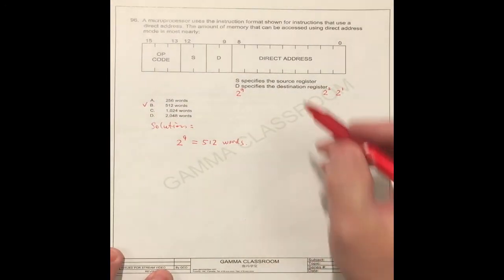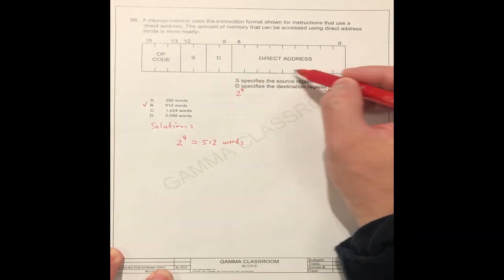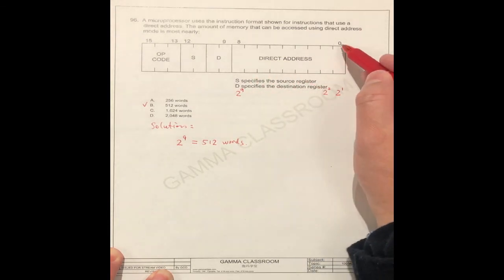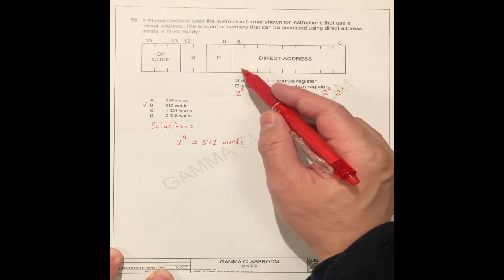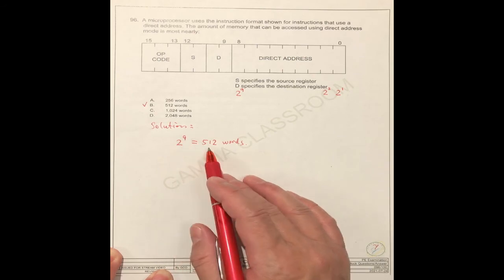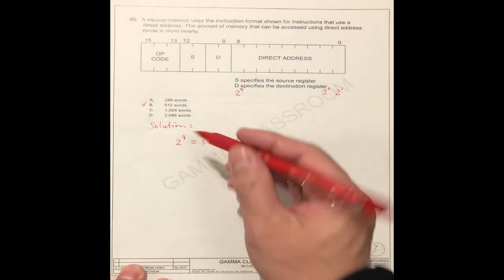Because this is the direct address from here. All the amount depends on this number. You have zero to eight. You have total nine digits. So two power nine equals 512 words. The correct answer should be B.